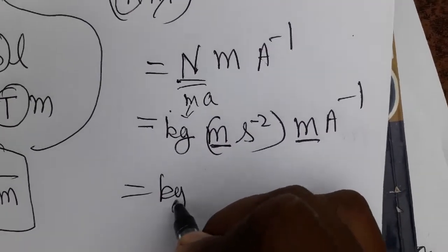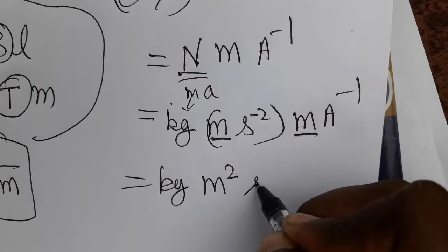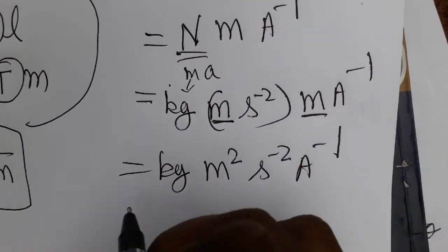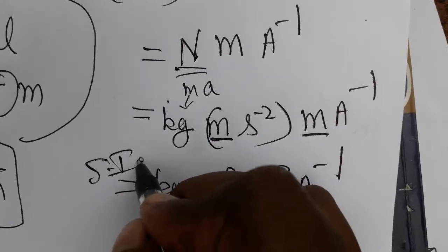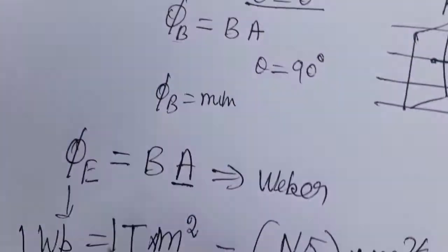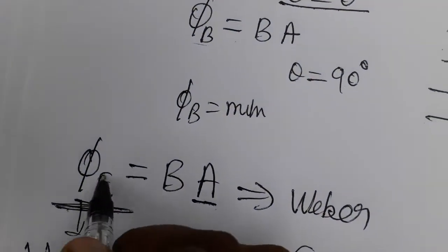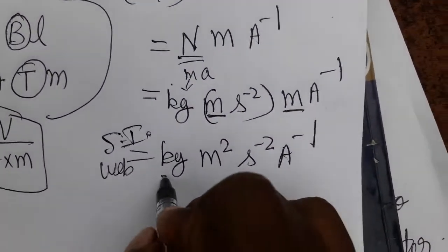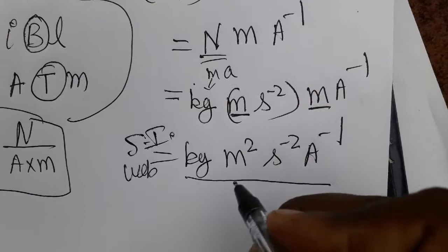So the SI unit for Weber is kg meter squared second to the minus two ampere inverse. B is the symbol for magnetic field, and we have found the SI unit for one Weber.